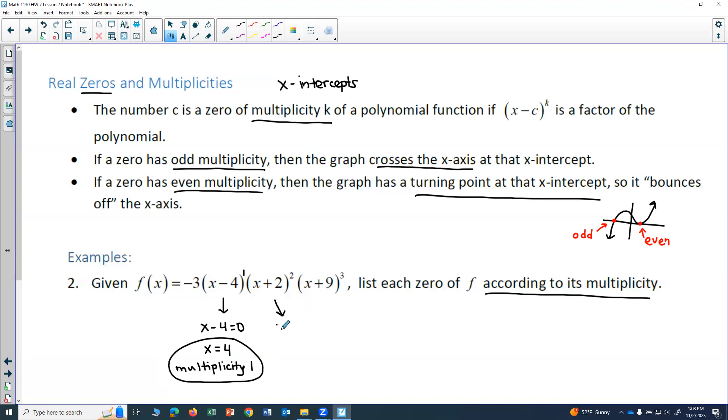Alright, to find this zero, I'm going to take the factor x plus 2, set it equal to 0. And so I get x equals negative 2.